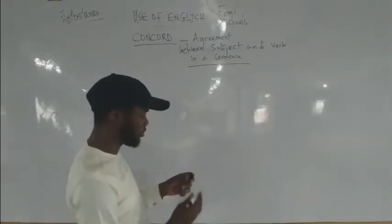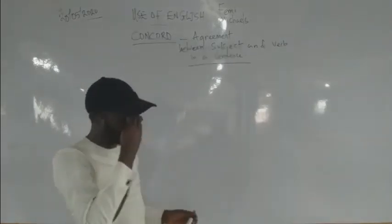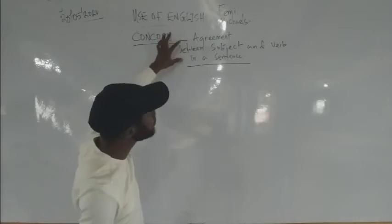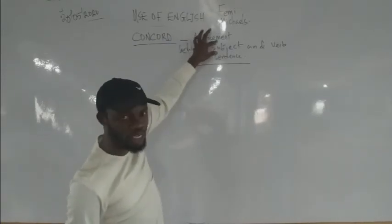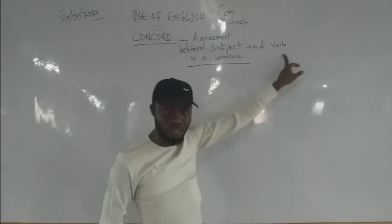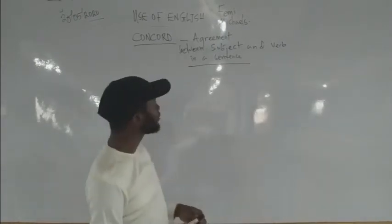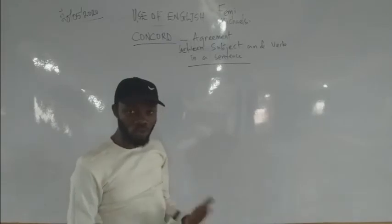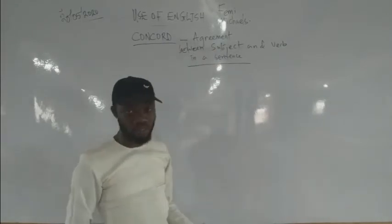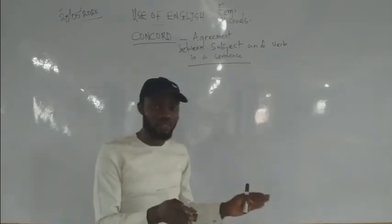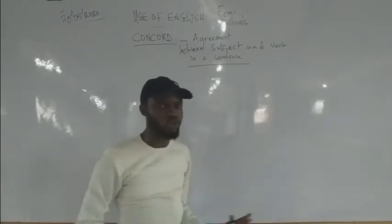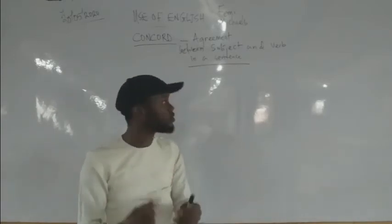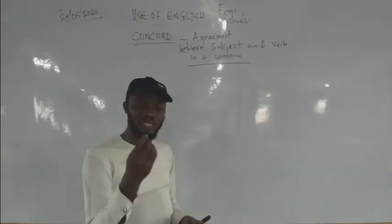If you don't know what a subject means and you don't know what a verb means, you might need to go familiarize yourself with those singular topics. Once you know the subject and verb of a sentence, we can go on. The subject of a sentence is the part that shows the person performing the action. The verb is the part that shows the action being performed.